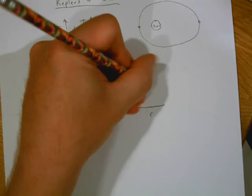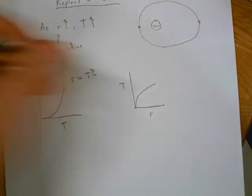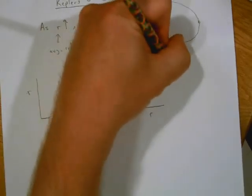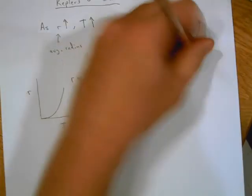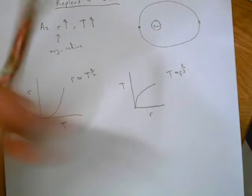Or if you graphed it like this, you should have had something like this. You might go oh that's a square root, but it's not actually a square root because it's actually a two-thirds relationship, so r raised to the two-thirds.